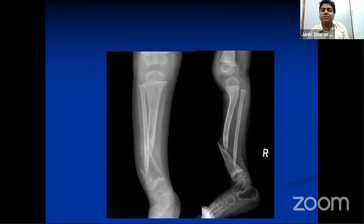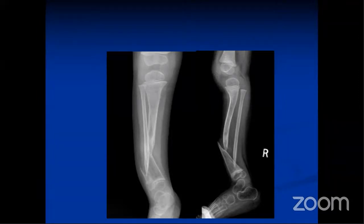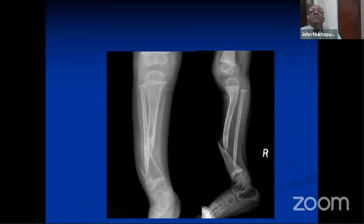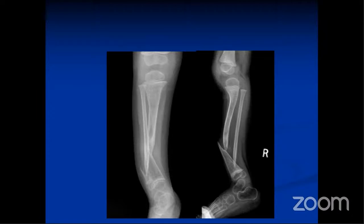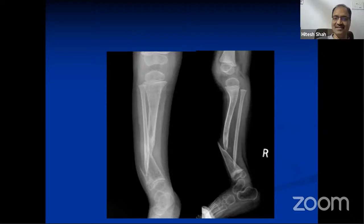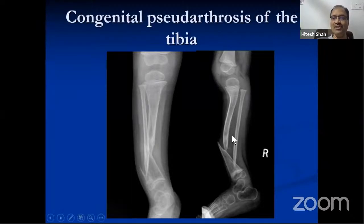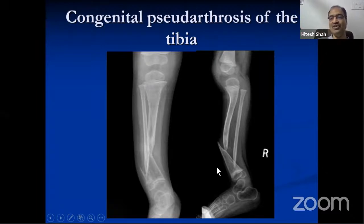Next case. This is anterolateral bowing with fractures — pathological fracture of the distal one-third of the tibia, and also fracture of the fibula. Some disease you know of? Congenital pseudarthrosis of tibia. For the extra description: the bowing is present on the proximal third, there is lysis and sclerosis, and there are atrophic changes. These are the typical features of congenital pseudarthrosis of the tibia. Janaki wants to say it may be associated with neurofibromatosis.